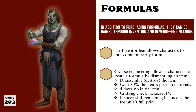The other way to gain new formulas is through reverse engineering. This works pretty much the same, but in reverse. Instead of creating a new item, you're taking apart an item you already have to see how it works, and then creating a formula to make that item through the knowledge gained by taking it apart.